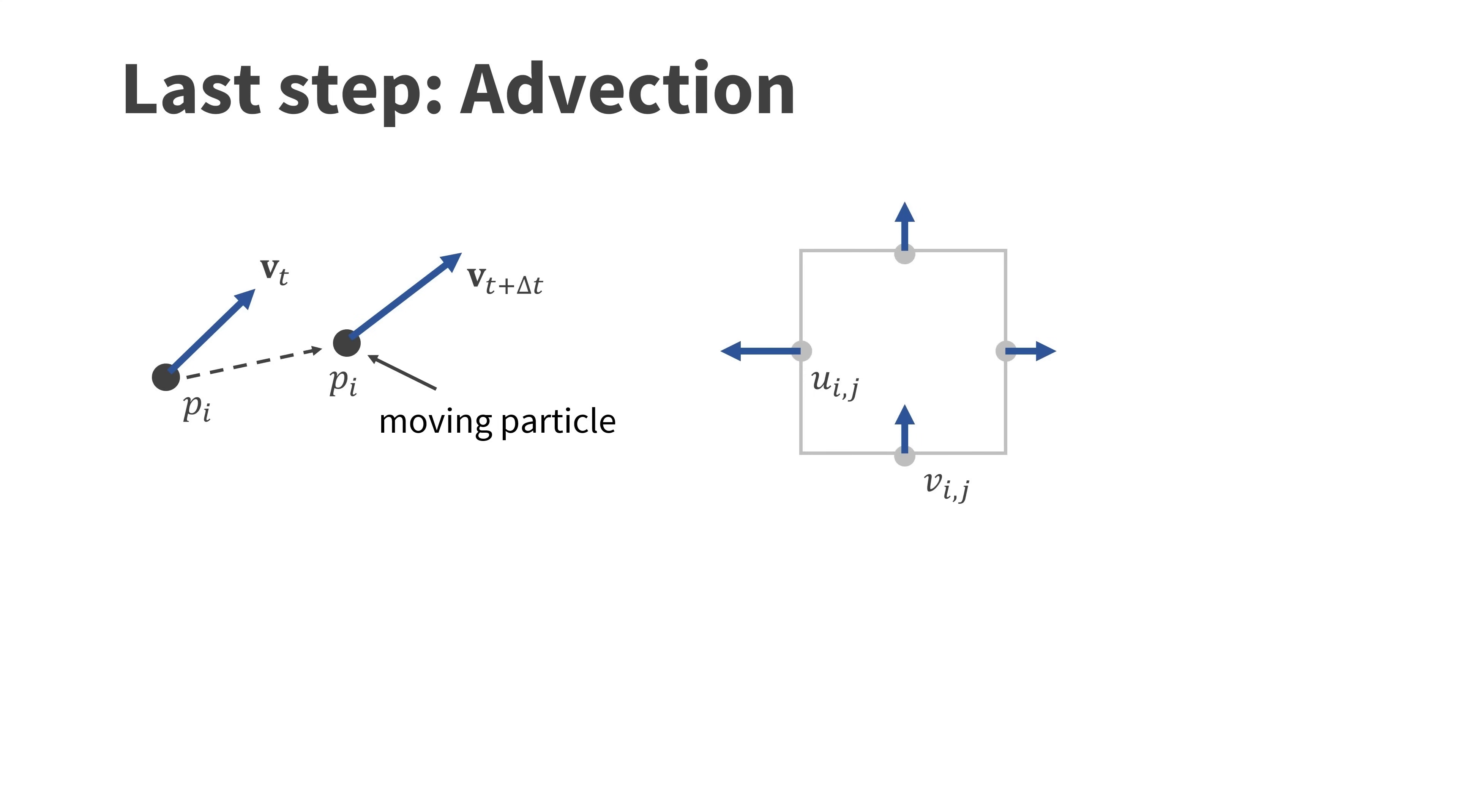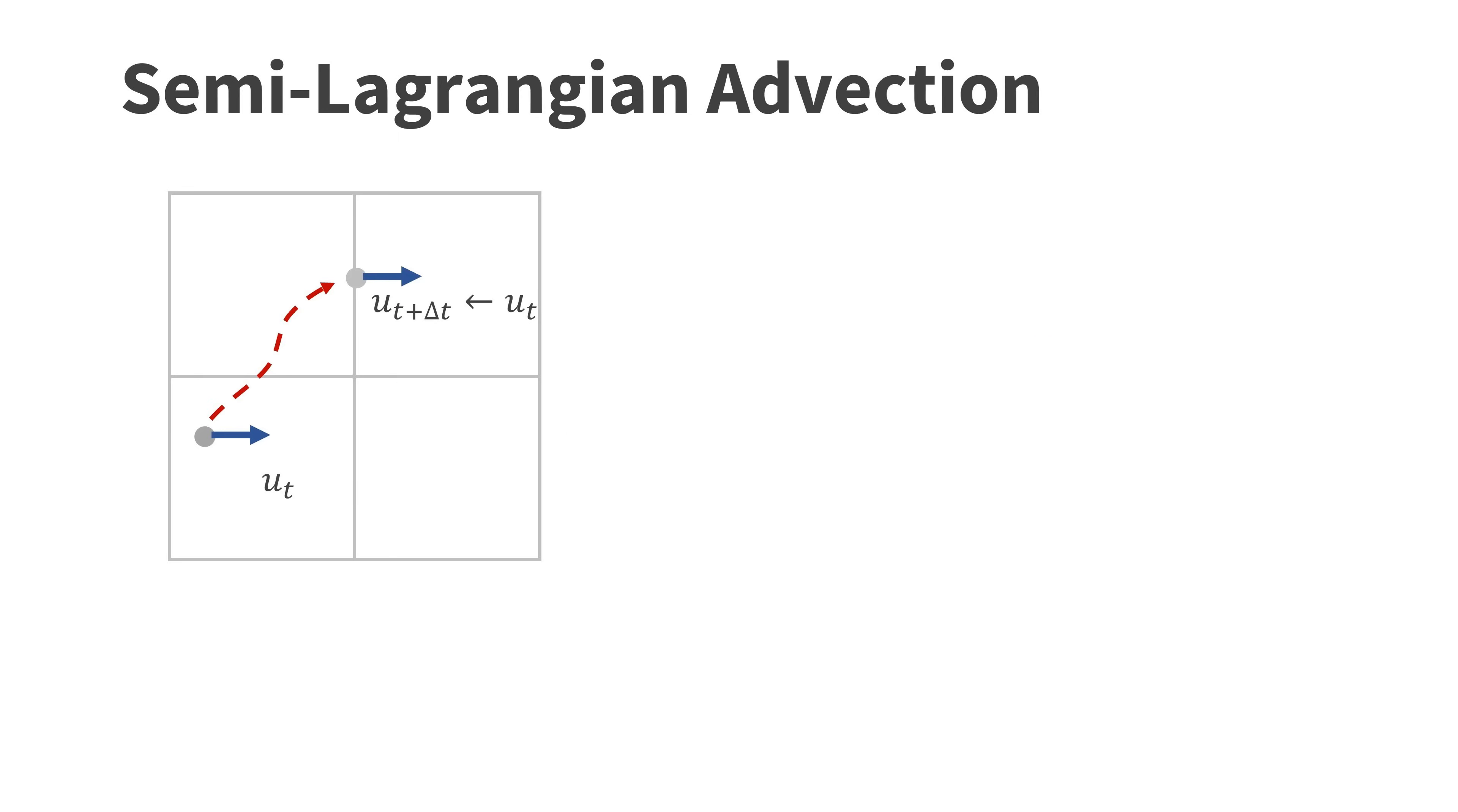The last step of our simulation is advection. In a fluid the velocity state is carried by particles, the atoms. However, while particles move, our velocity vectors are attached to a static grid. Therefore, we need to move the velocities inside the grid. A simple and stable method to do this is semi-Lagrangian advection.